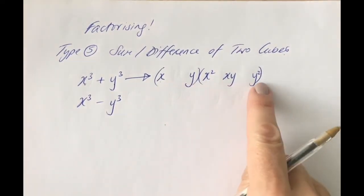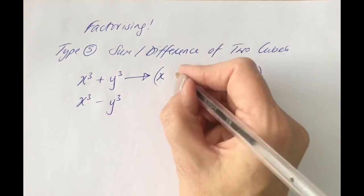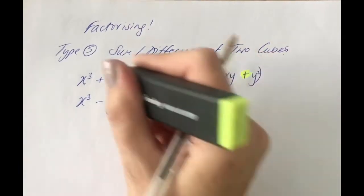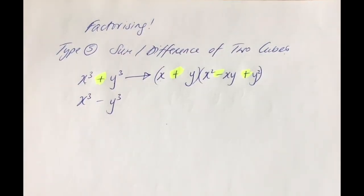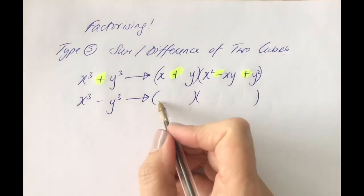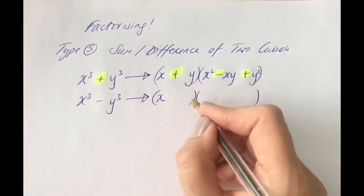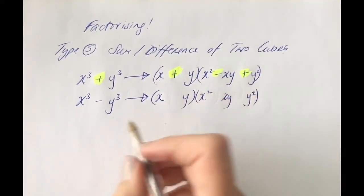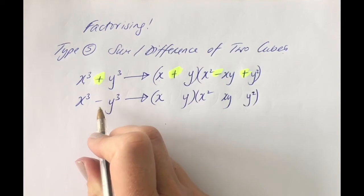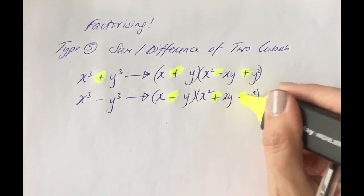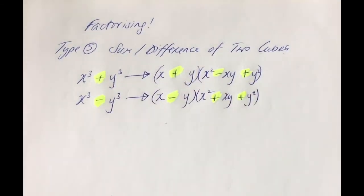Filling in the signs — and again this is something you're just going to have to learn — if it's a plus, the signs go plus, minus, plus for the sum of two cubes. For the difference of two cubes, again you'll have two brackets, you consider what you've cubed to get x cubed and y cubed, square them, multiply the two together, but the signs for the difference of two cubes go minus, plus, plus — and you'll just have to practice to remember it.